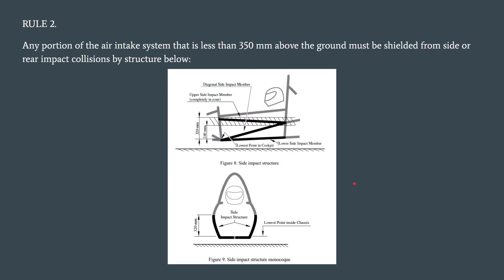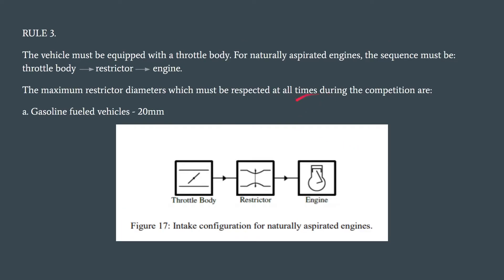The second rule states that the chassis structure must protect all portions of the air intake system that are less than 350 mm above the ground from any side or rear impact collisions. The third rule states that a throttle body must be present in our vehicle, and the sequence for our naturally aspirated engine must be: throttle body first, then the restrictor, and then the engine. There is also a restriction on the diameter of the restrictor, which is limited to 20 mm for gasoline-fueled vehicles.